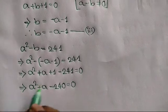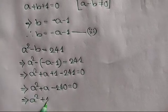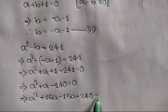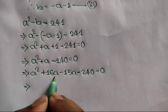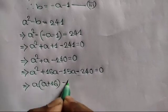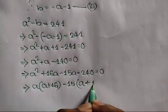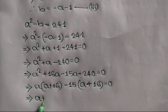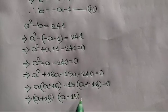Applying middle term breaking, we can write A squared plus 16A minus 15A minus 240 is equal to 0. Taking common A from the first two terms, we get A bracket A plus 16, and taking common negative 15 from the last two terms, we get negative 15 bracket A plus 16 is equal to 0.